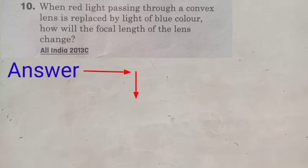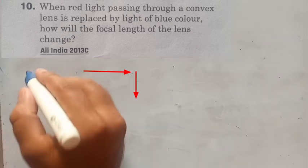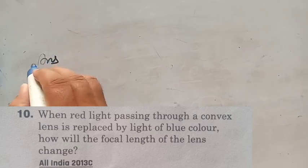When red light passing through a convex lens is replaced by light of blue color, how will the focal length of the lens change? Answer is this question.